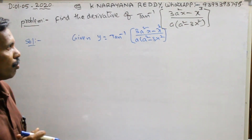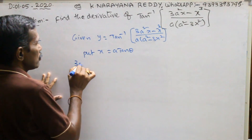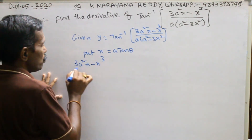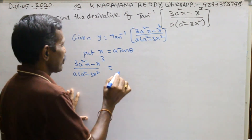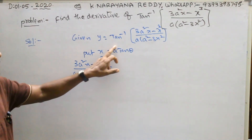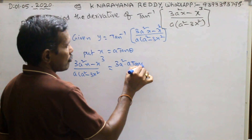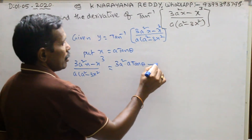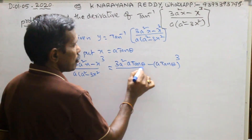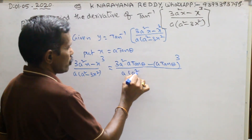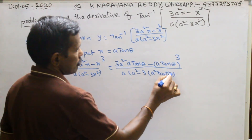Now, these problems can be done by the substitution method. Consider (3a²x minus x³) divided by a(a² minus 3x²). In place of x, we substitute x = a·tan(θ). So the numerator becomes 3a² times a·tan(θ) minus (a·tan(θ))³, and the denominator becomes a times (a² minus 3a²·tan²(θ)).